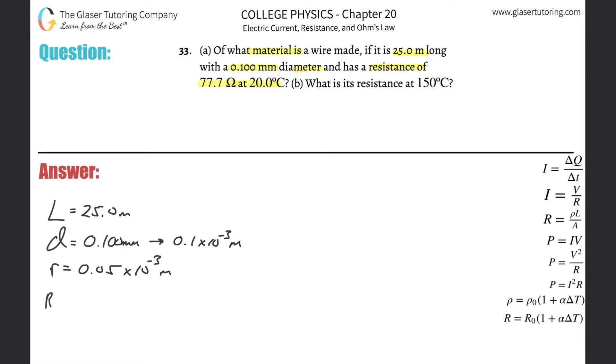Then it tells us a resistance, so it's 77.7 ohms. And they tell us at what temperature. The reason why they tell us the temperature is because the resistance of an object could change if the temperature changes. We know that from doing prior problems as well.